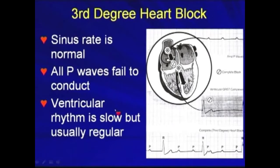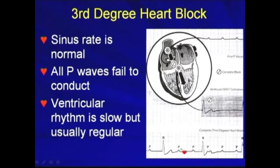The sinus rhythm is normal here, but all P waves fail to conduct. The ventricular rhythm is slow but usually regular. So there's complete AV dissociation — there's no relation between the P wave and the QRS complex.